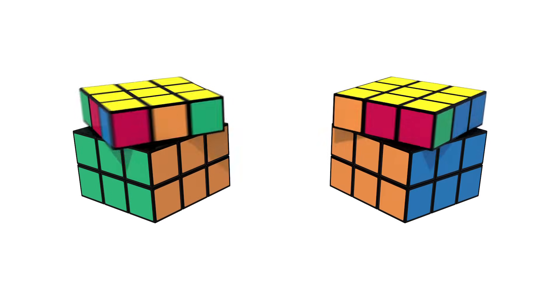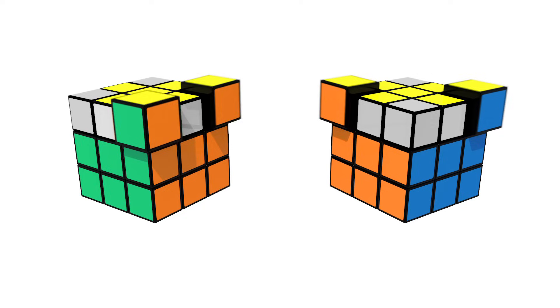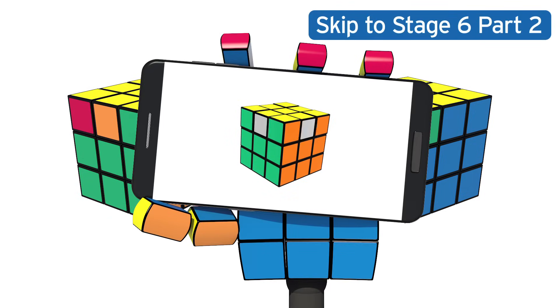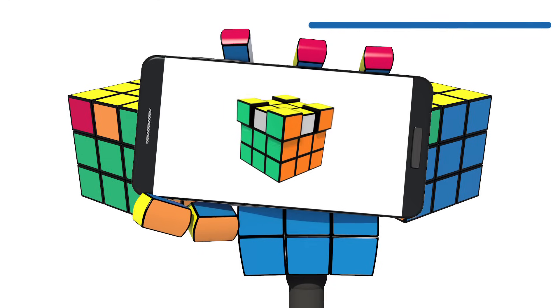Hold the cube with the yellow face on top. Twist the top face until at least two corners are in the right location. If you get lucky and all four corners are in the right place, then move on to stage six, part two.